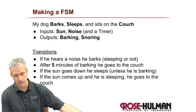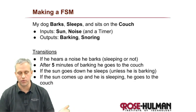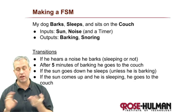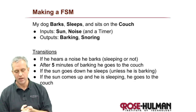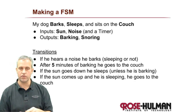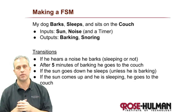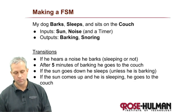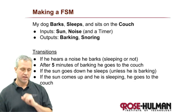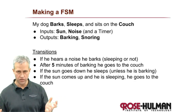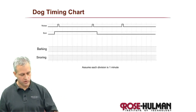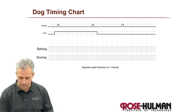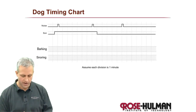The problem statement here is a dog. This is a rather simple dog — it barks, sleeps, and sits on the couch. So there's three things it can do, and you've probably got a good idea for how many circles there are going to be. The inputs are whether the sun is up or not. If the sun is up, that means he's not sleeping. If he hears a noise, he's going to start barking. This particular dog barks for five minutes whenever he hears a noise — it doesn't matter if he's asleep or awake. If he hears a noise, he's going to start barking. Just to make sure you've got it, let's go ahead and do a quick timing chart together.